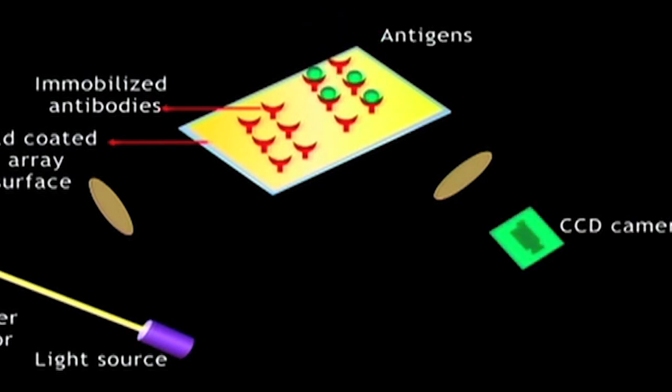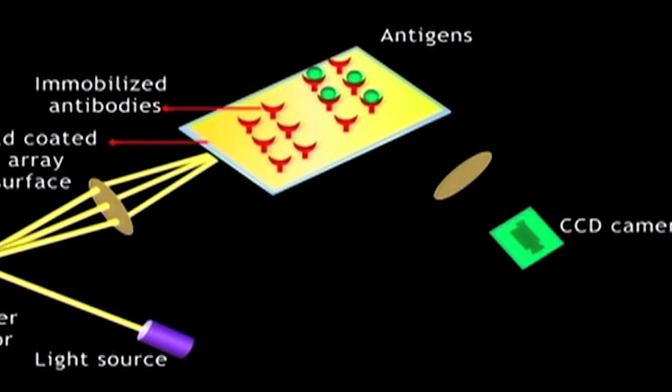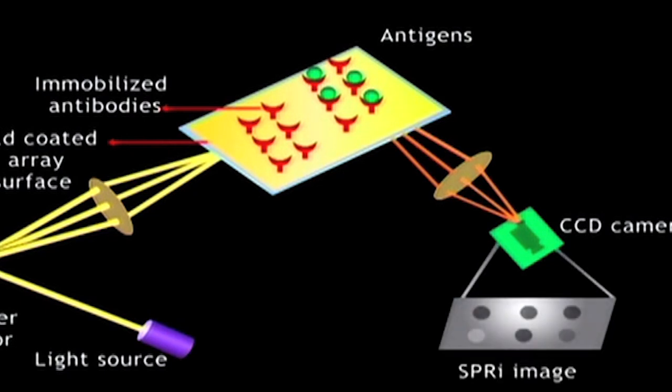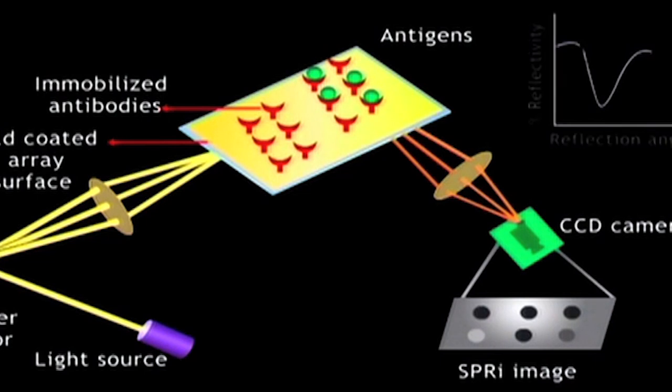Binding of target antigen with an antibody can be detected in real time due to changes in the intensity of reflected light from every spot on the array surface. Multiple biomolecular interactions can be studied simultaneously in a high throughput manner, and changes occurring on the array surface can provide kinetic data about the interactions.